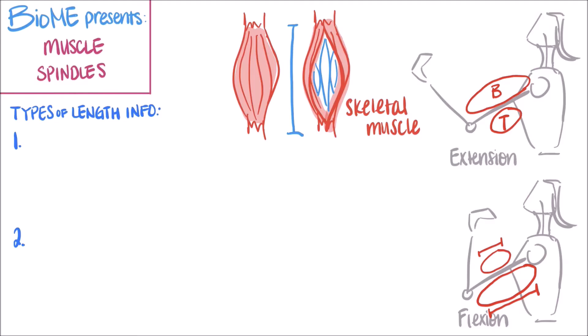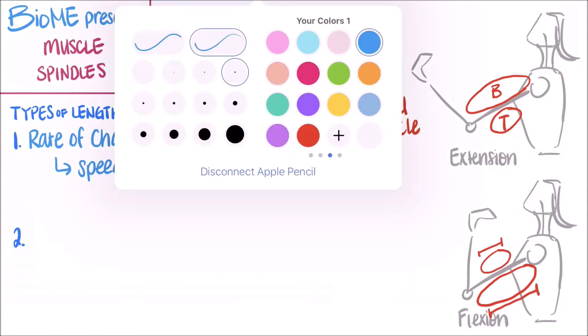There are two types of length information that muscle spindles pick up on. First, the rate of change in length. Keep in mind that both of these types of information are about length. The rate of change in muscle length is about the speed at which a muscle is stretched. From our previous example, this type of information allows the brain to know how fast our forearm is being extended or flexed.